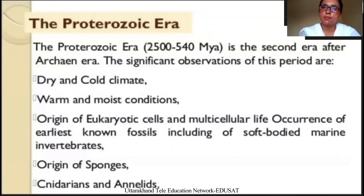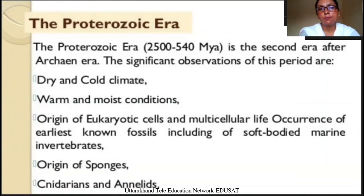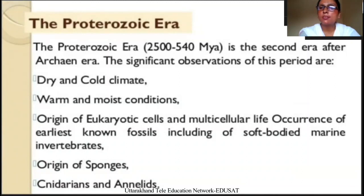The second era is known as the Proterozoic era. The Proterozoic era is the second era after the Archean era. The significant observations of this period are: the climate was dry and cold, and environmental conditions were warm and moist. There was origin of eukaryotic cells and multicellular life, occurrences of earliest known fossils including soft-bodied marine invertebrates, and origin of sponges, cnidarians and annelids.